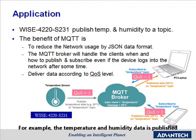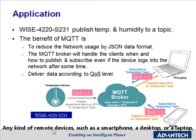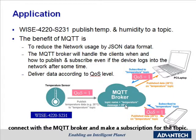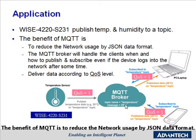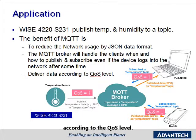For example, temperature and humidity data is published by the AWS 4220 S231 to a topic according to its MAC address. Any kind of remote device, such as a smartphone, a desktop, or a laptop, connects with the MQTT broker to make a subscription for the topic. The benefit of MQTT is to reduce network usage by using JSON data format, and the broker will coordinate the source and publish the data to remote devices according to the QoS level.